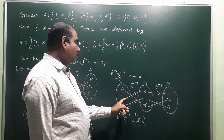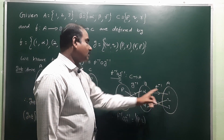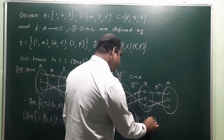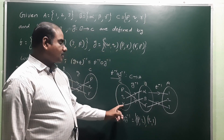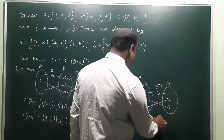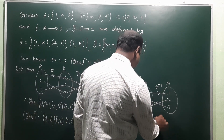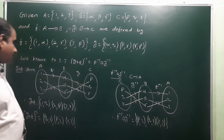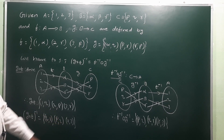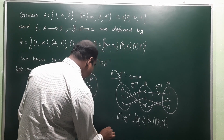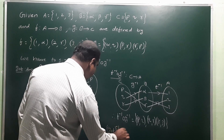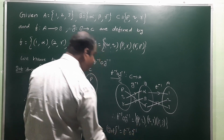Second element: q goes to alpha (via g⁻¹), alpha goes to 1 (via f⁻¹), so q maps to 1. Next, r goes to beta (via g⁻¹), beta goes to 3 (via f⁻¹), so r maps to 3. So f⁻¹ ∘ g⁻¹ = {(p,2),(q,1),(r,3)}, which equals (g∘f)⁻¹. Both sides are equal, therefore (g∘f)⁻¹ = f⁻¹ ∘ g⁻¹. That is the proof.